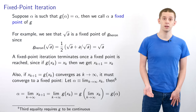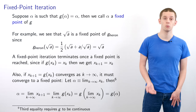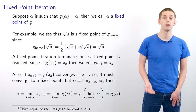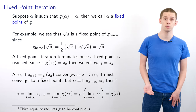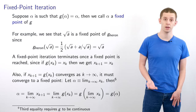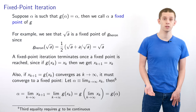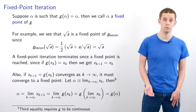A fixed point iteration will terminate once a fixed point is reached, since we'll have x_{k+1} = x_k and therefore all subsequent x_k will be equal to the same value.